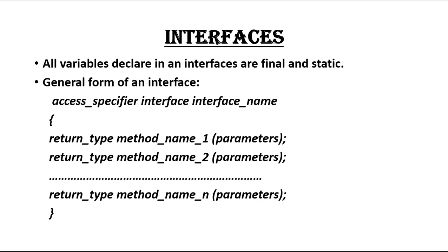Here is the general form of declaring an interface. First, you need to specify an access specifier, then the keyword 'interface', and finally a valid identifier as the interface name. For the abstract methods, you need to specify the return type, the method name, and the parameter list of that method.